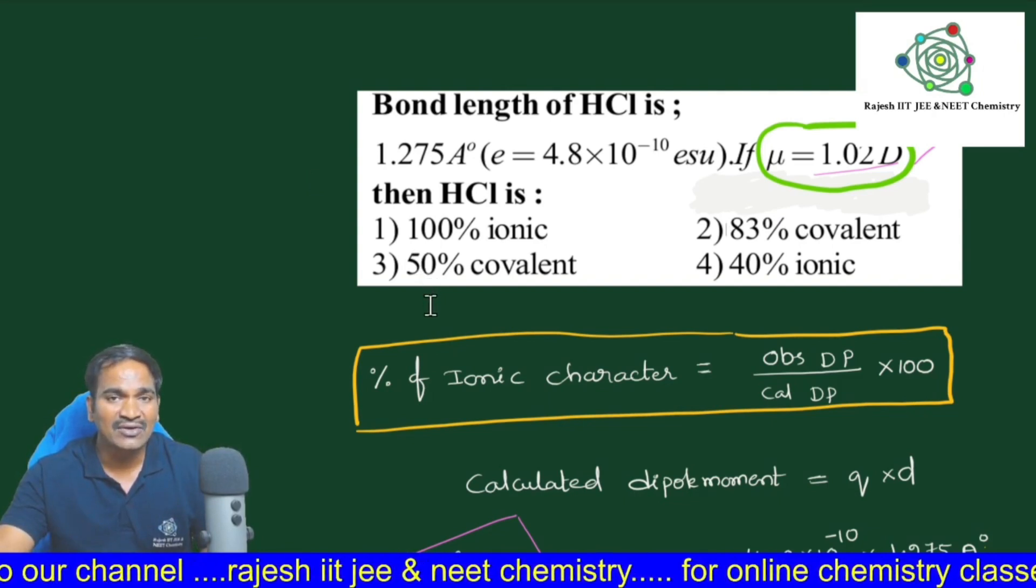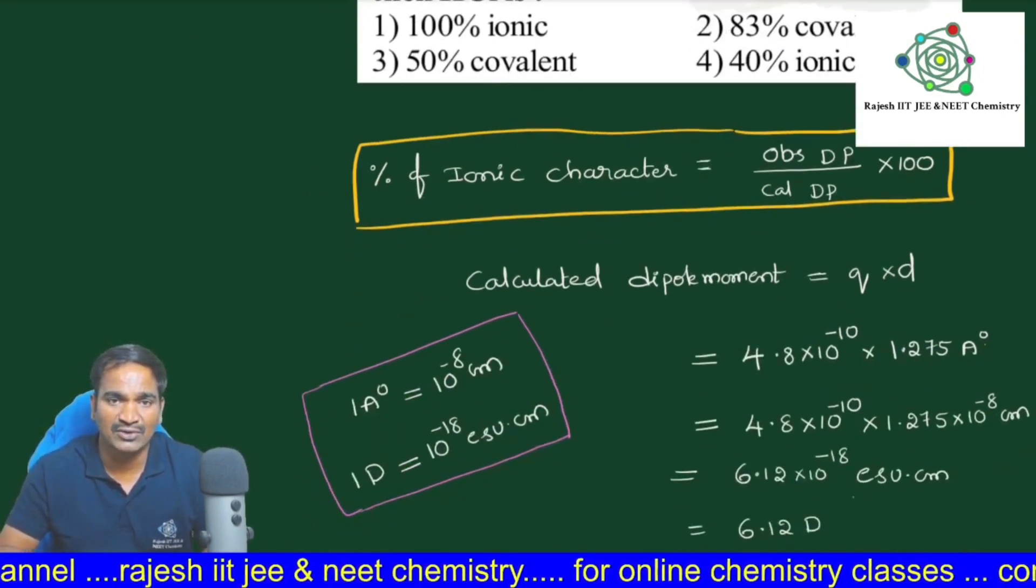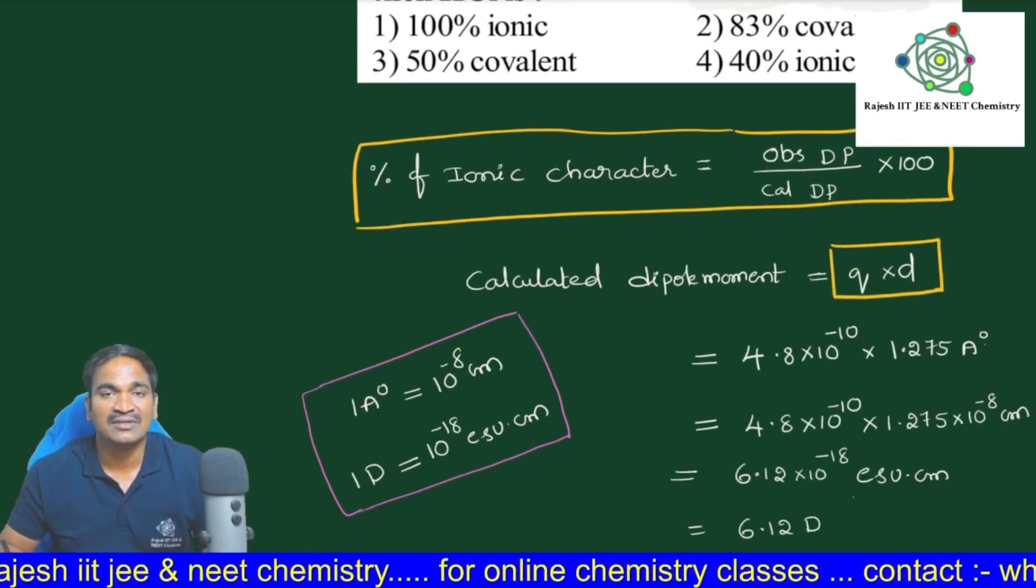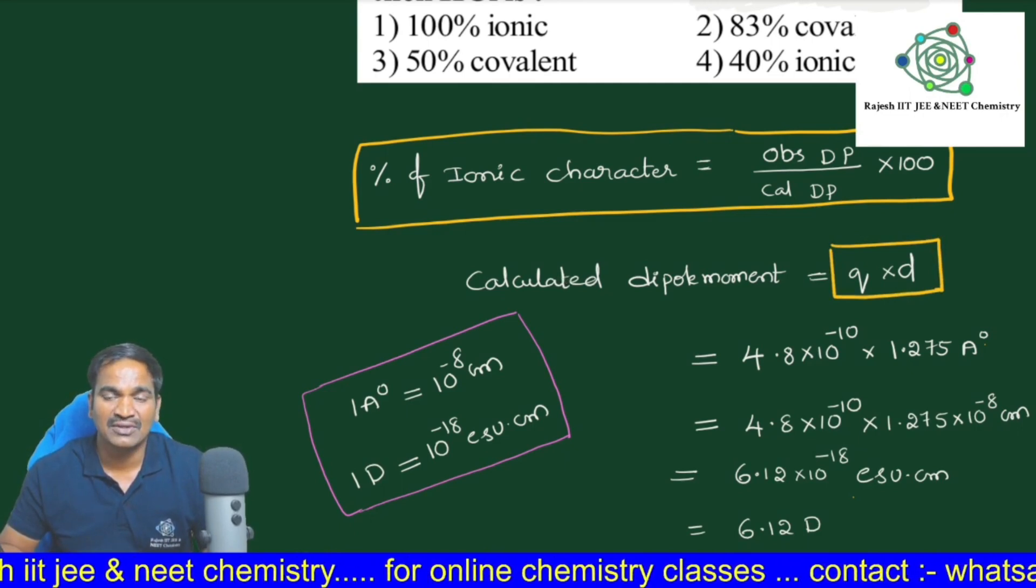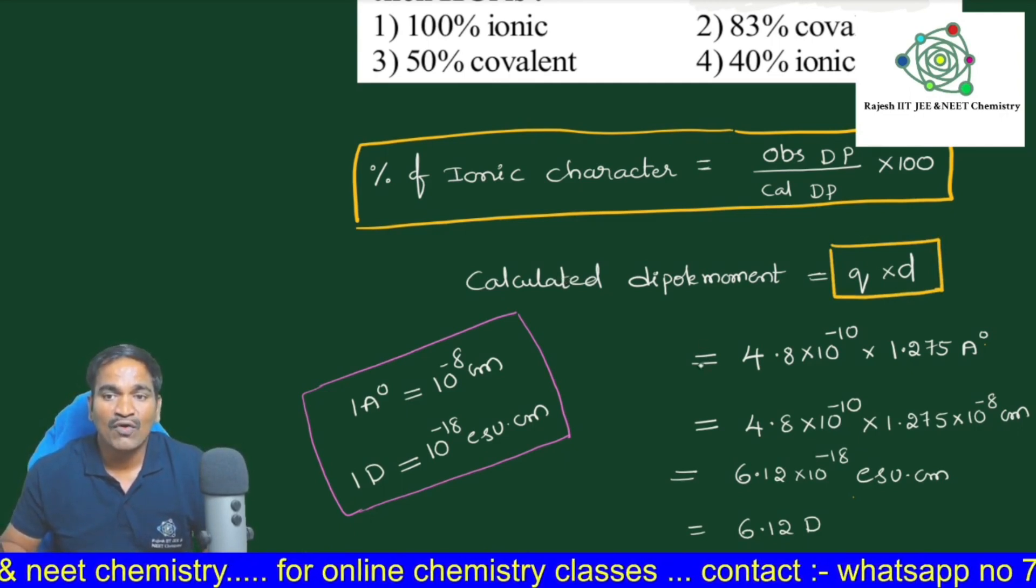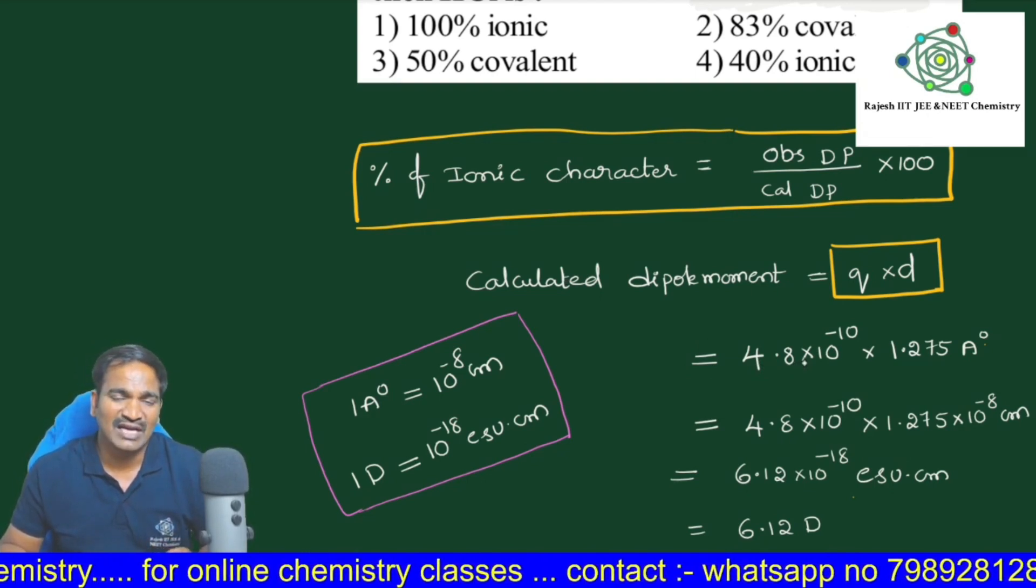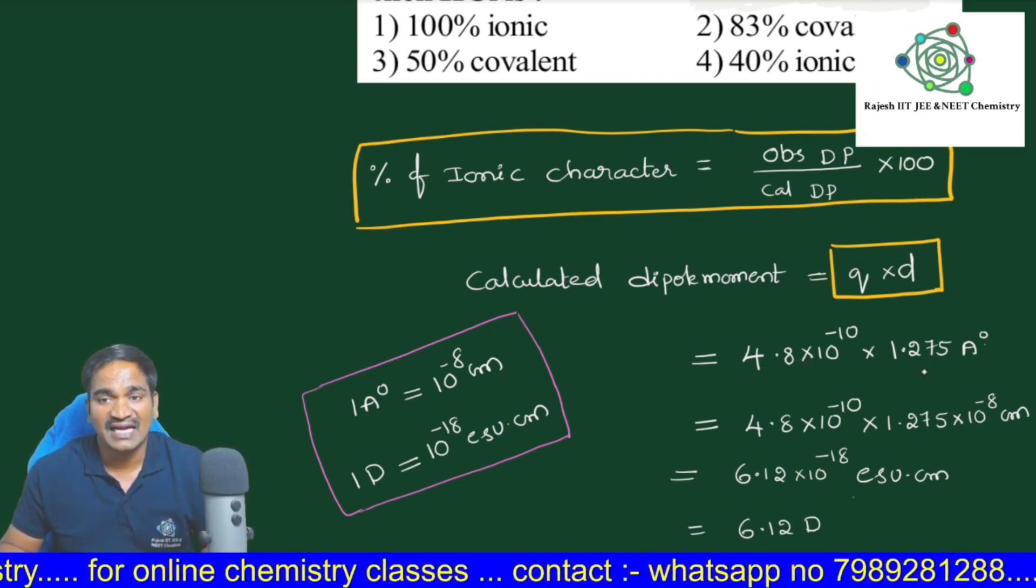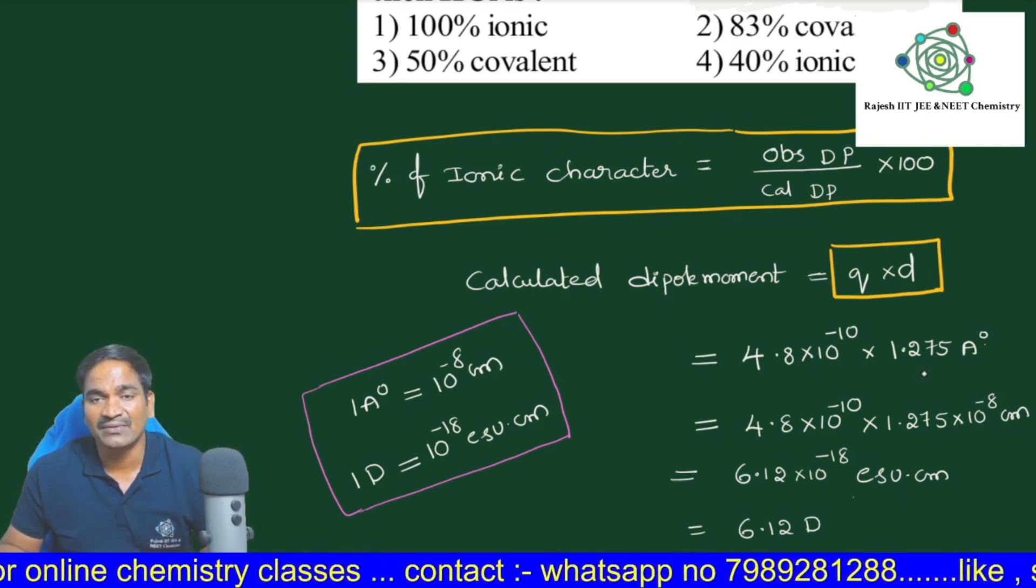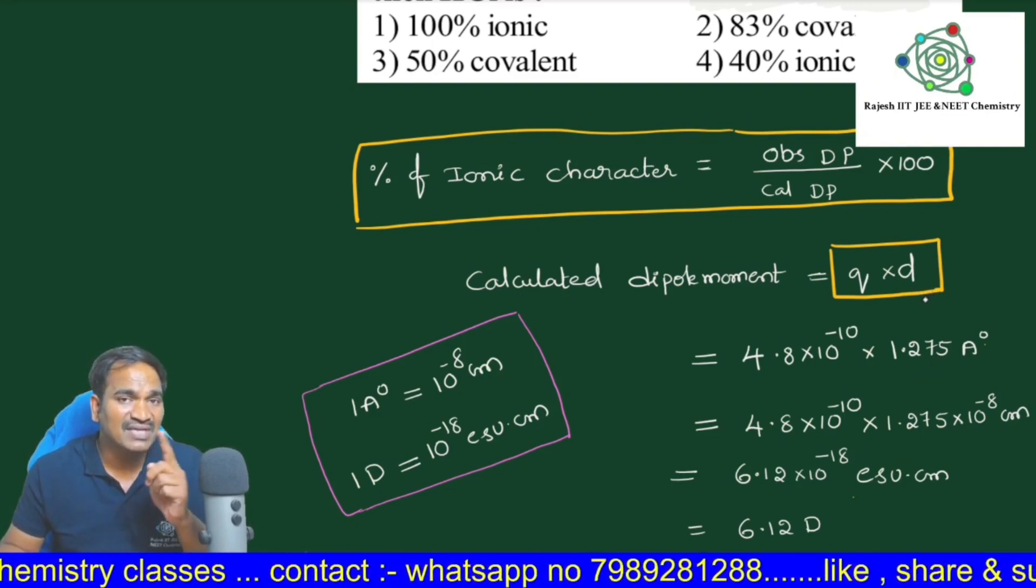What is the charge here given? The given charge is 4.8 × 10⁻¹⁰ ESU (electrostatic units), and distance, how much is given? 1.275 angstroms.